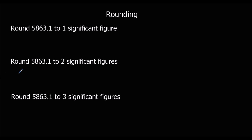Same thing again. So one significant figure means the first non-zero number we start counting from — that's here, 1. We look at the next number. It is 5 or above, so it will round up, and that will become a 6. But the answer is not 6. The value of this number is 5,000, so it's going to round up to 6,000.